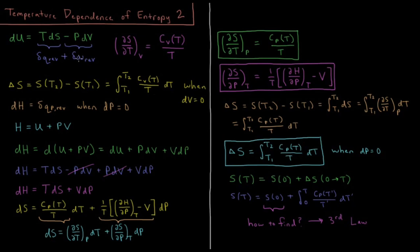Plus the work, dw_rev, which is minus pdV — the external pressure times the change in volume. We saw from the previous video that the partial derivative of the entropy with respect to temperature at constant volume is equal to the constant volume heat capacity at that given temperature divided by the temperature.